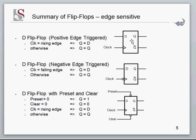For the falling edge equivalent, you add a bubble to the symbol. This indicates triggering on a negative edge — if there is a negative edge, D is sampled (its value is taken) and put onto Q, and kept there until another falling edge occurs, at which point D is sampled again.